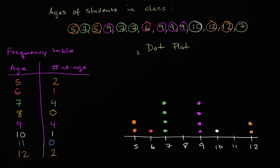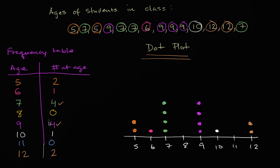So we have a frequency table, dot plot, and list of numbers — all showing the same data in different ways. Once you have the data represented in any of these ways, we can start to ask questions about it. For example, what is the most frequent age? When you look at the dot plot visually, the most frequent ages are the two highest stacks — seven and nine are tied for the most frequent age, both appearing four times.